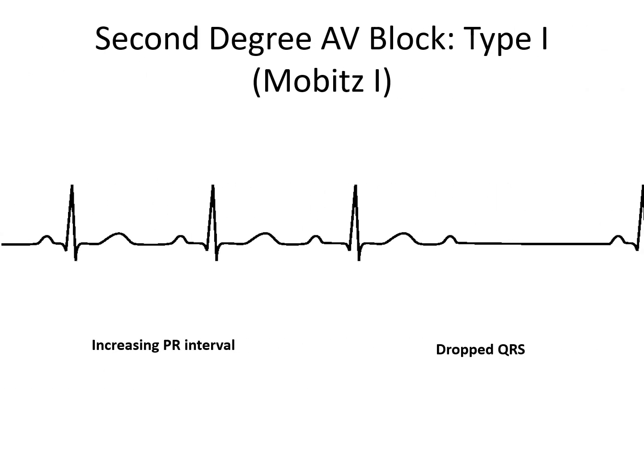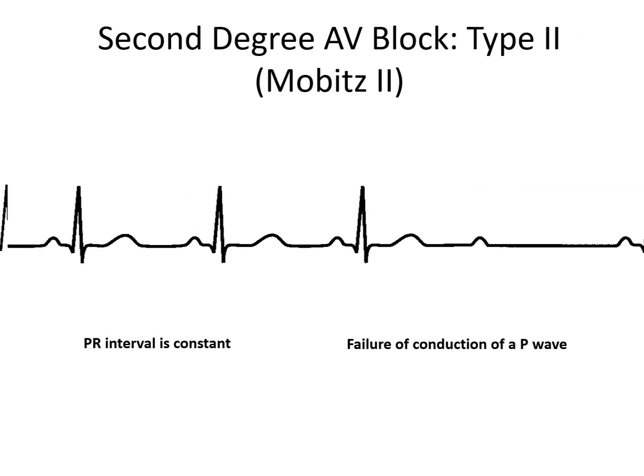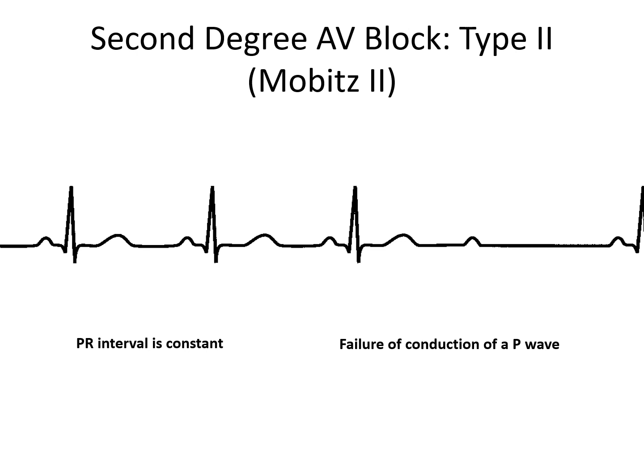In second degree atrioventricular block type 1, there is a constantly increasing PR interval to the point when there is a dropped QRS complex. In second degree atrioventricular block type 2, the PR interval is constant but eventually there is a failure of conduction of the P wave and a dropped QRS complex.